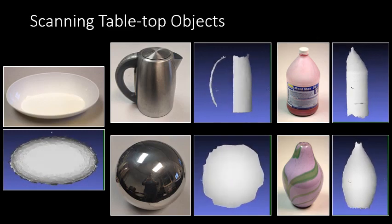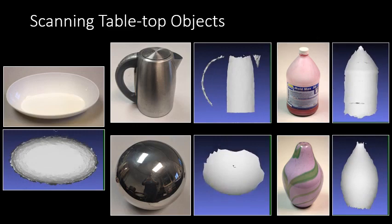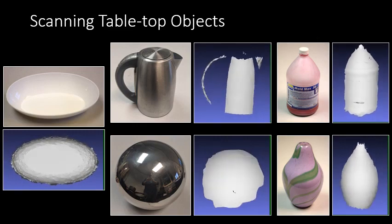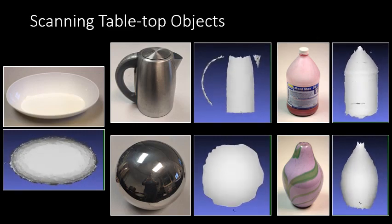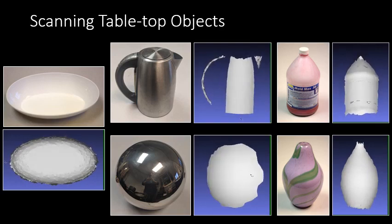Here are a few examples of objects we measured and their reconstructions. We see that our algorithm can reconstruct Lambertian, semi-transparent, glossy and specular objects of complex geometry, both convex and concave, at an accuracy of a few millimeters.